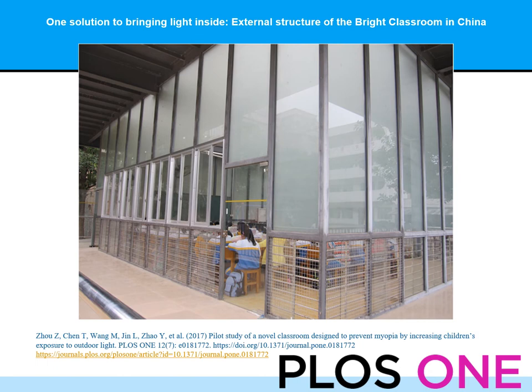Another way people have thought to bring light inside is structuring a classroom to introduce that. This particular slide shows the design of an experimental classroom in China made of glass — mostly glass construction with an opaque glass rooftop — that introduces an increase in light intensity. This was highlighted as a way to introduce more light while kids are in the classroom during the day. However, a less expensive way would be to increase the amount of breaks such as PE time, snack time, and lunch time, and to discourage kids from being in the classroom unless absolutely necessary.